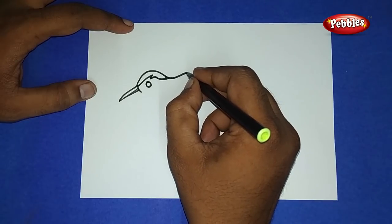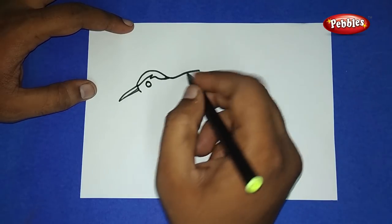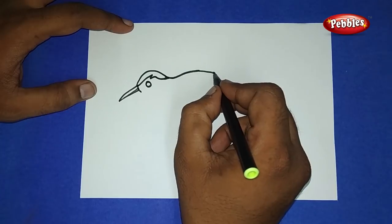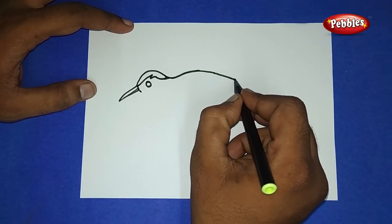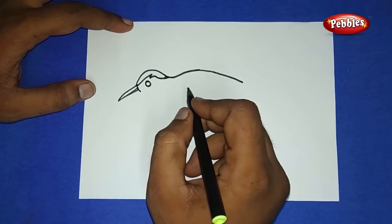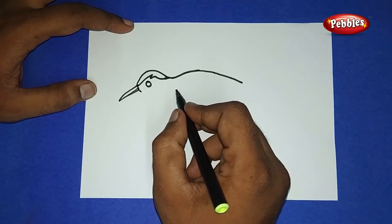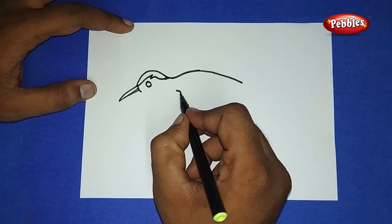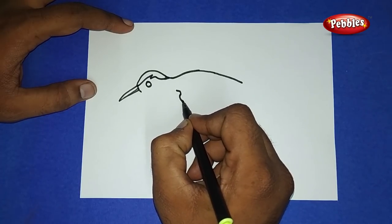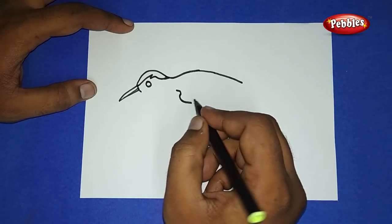And slightly come down. Now leaving some gap, draw like this and go slantingly upside.